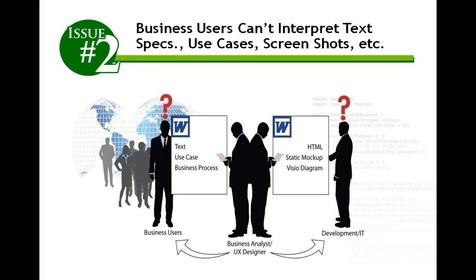The second issue is that the tools BAs use today are really difficult for business users to interpret — namely text specifications, use cases, Visios, screenshots in PowerPoint and so on. When you're sitting with the business user, there's a lot of confusion in trying to communicate what you're trying to accomplish, and they have a lot of trouble communicating back what they want. Then we're turning around and handing off these giant static documents to downstream organizations. So it's no wonder there's a lot of confusion and rework.